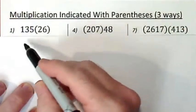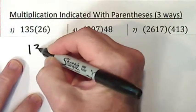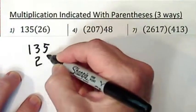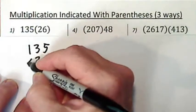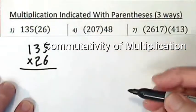Okay, solving the first one, I usually put the larger number on top. You can put them in any order, thanks to commutativity of multiplication. The order doesn't matter, you always get the same result.